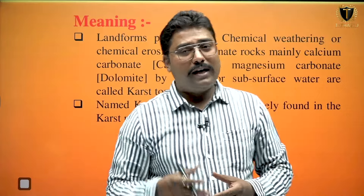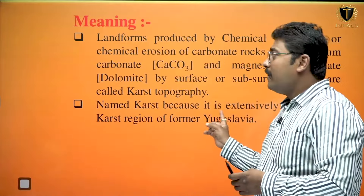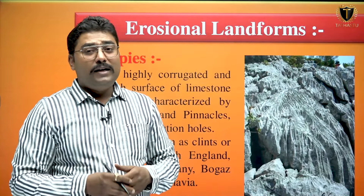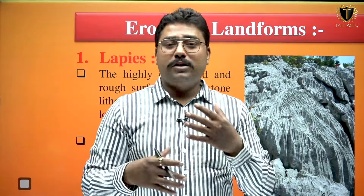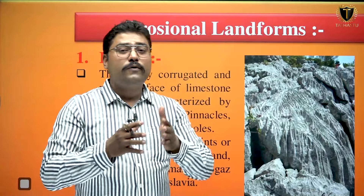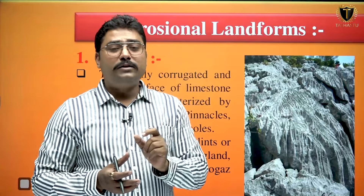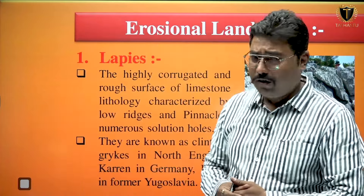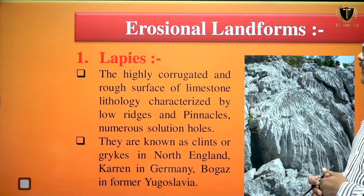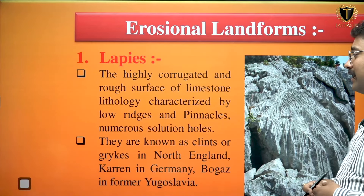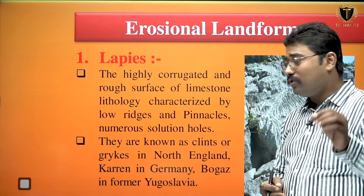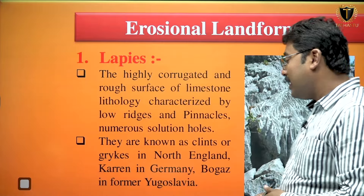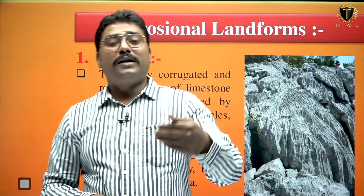First we will see the erosional features and then after we will move on to the depositional ones. The first erosional feature is lapies. When rainwater or surface water moves over the rocks, it will form small gullies, and those gullies as you can see in the image are considered as lapies. The highly corrugated and rough surface of the limestone lithology characterized by low ridges, pinnacles, and numerous solution holes. They are known as clints or grikes in northern England, karren in Germany, and bogas in former Yugoslavia.